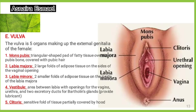Labia minora. The labia minora is defined as the smaller lips. The labia minora are a pair of small cutaneous folds that begin at the clitoris and extend downward. The anterior folds of the labia minora encircle the clitoris, forming the clitoral hood and the frenulum of the clitoris. Vestibule. The vestibule is the inner portion of the vulva extending from the Hart's line to the labia minora inward to the hymenal ring. Within the vestibule are located the urethral meatus and openings of Skene's and Bartholin's glands.